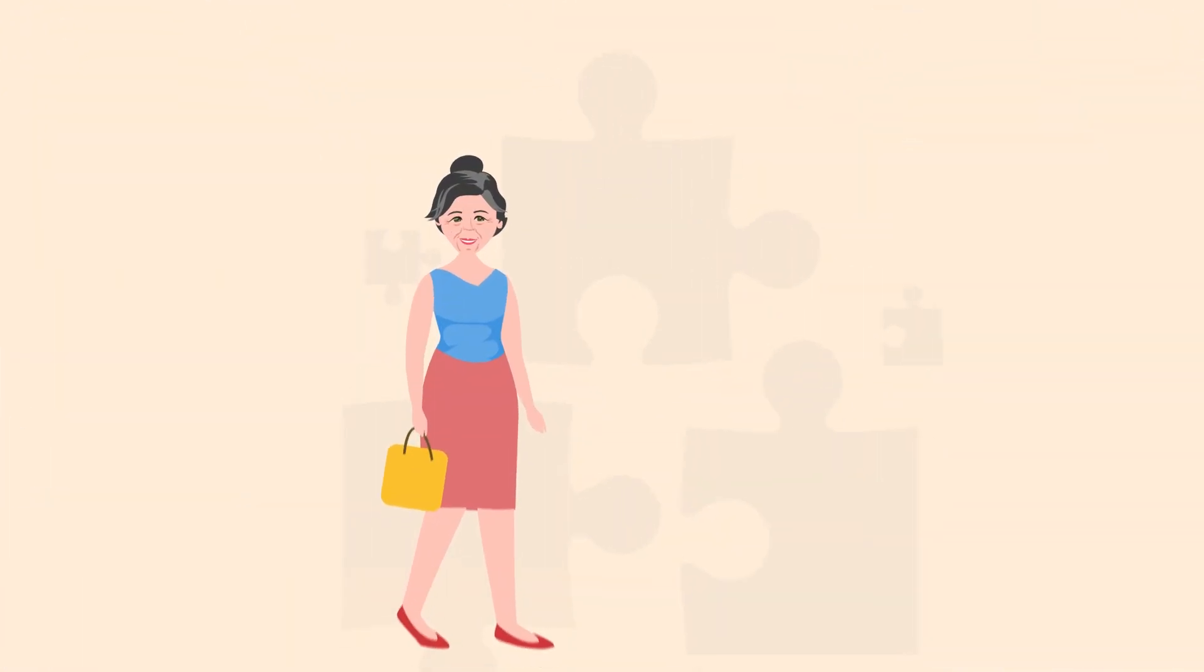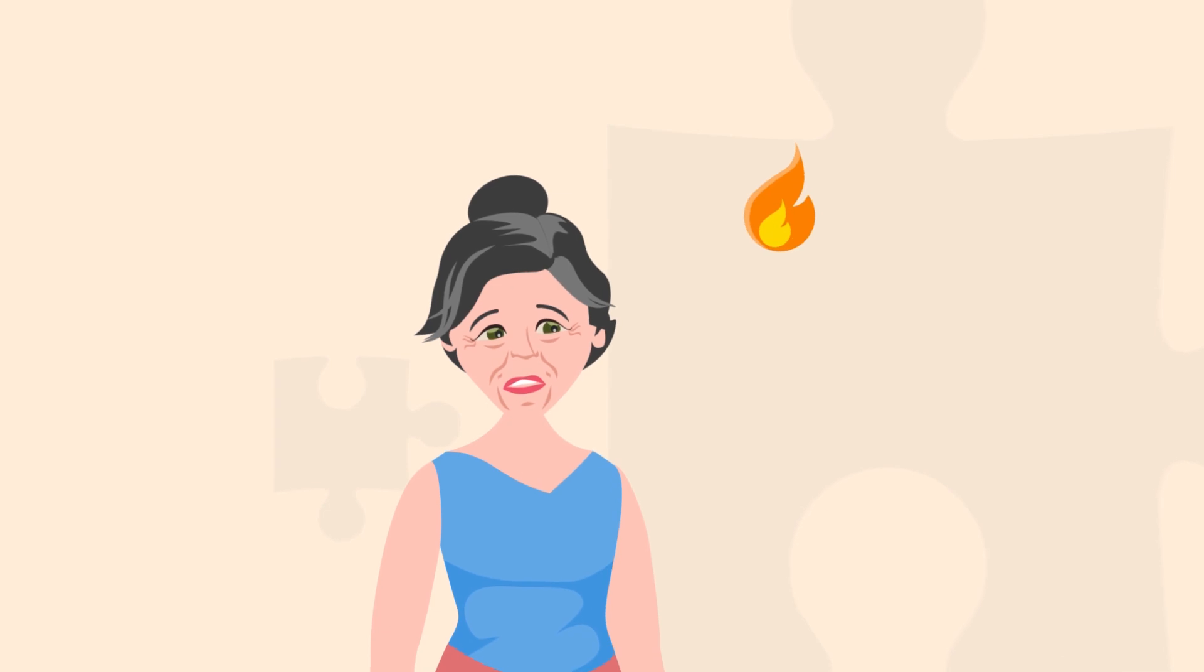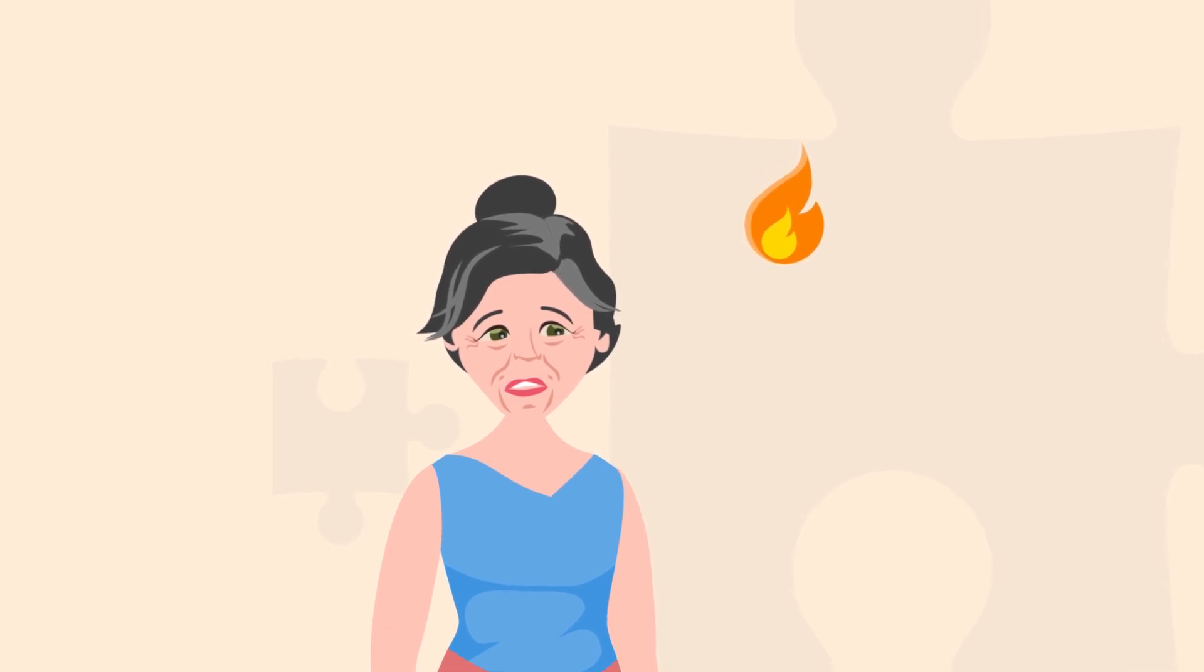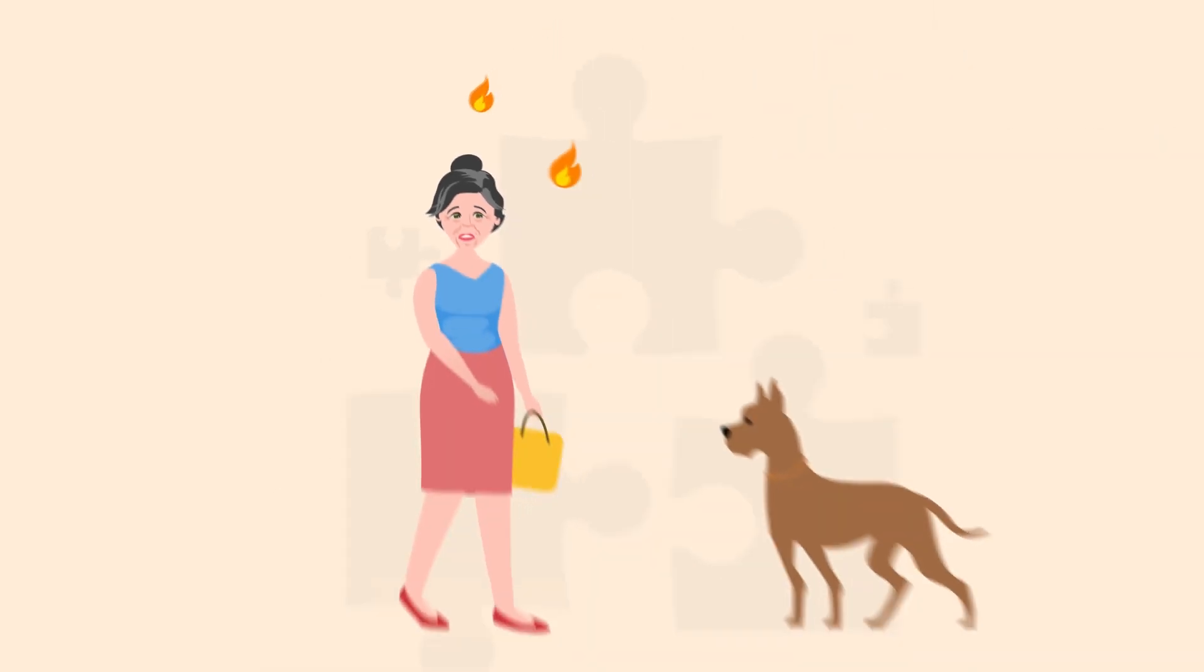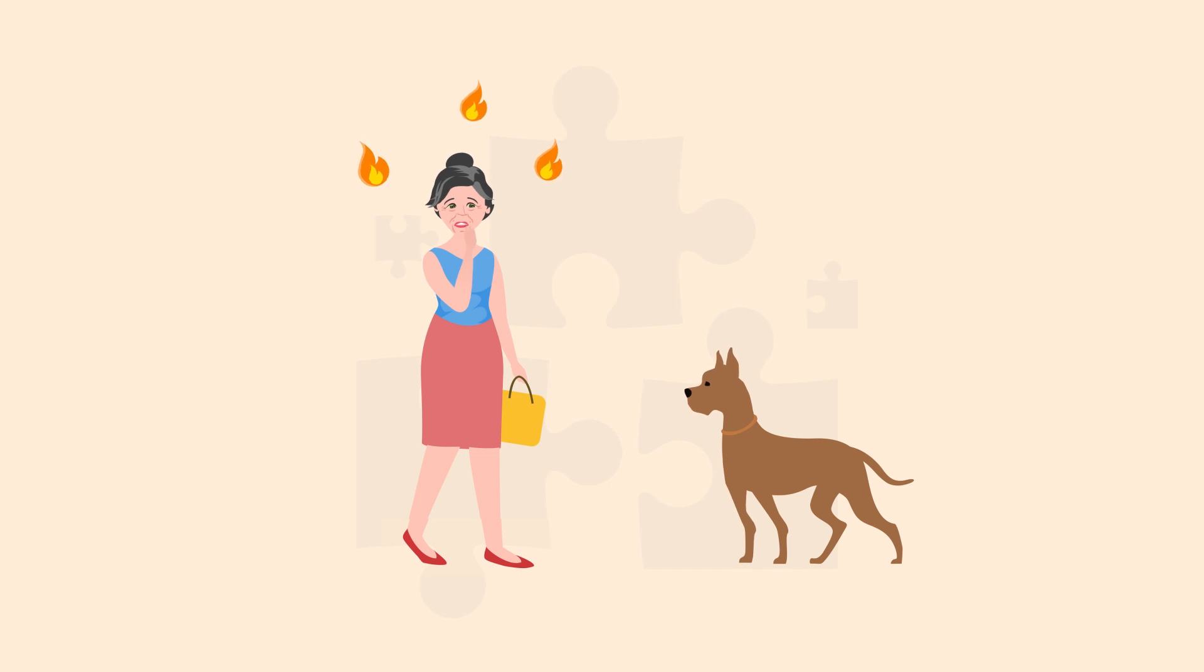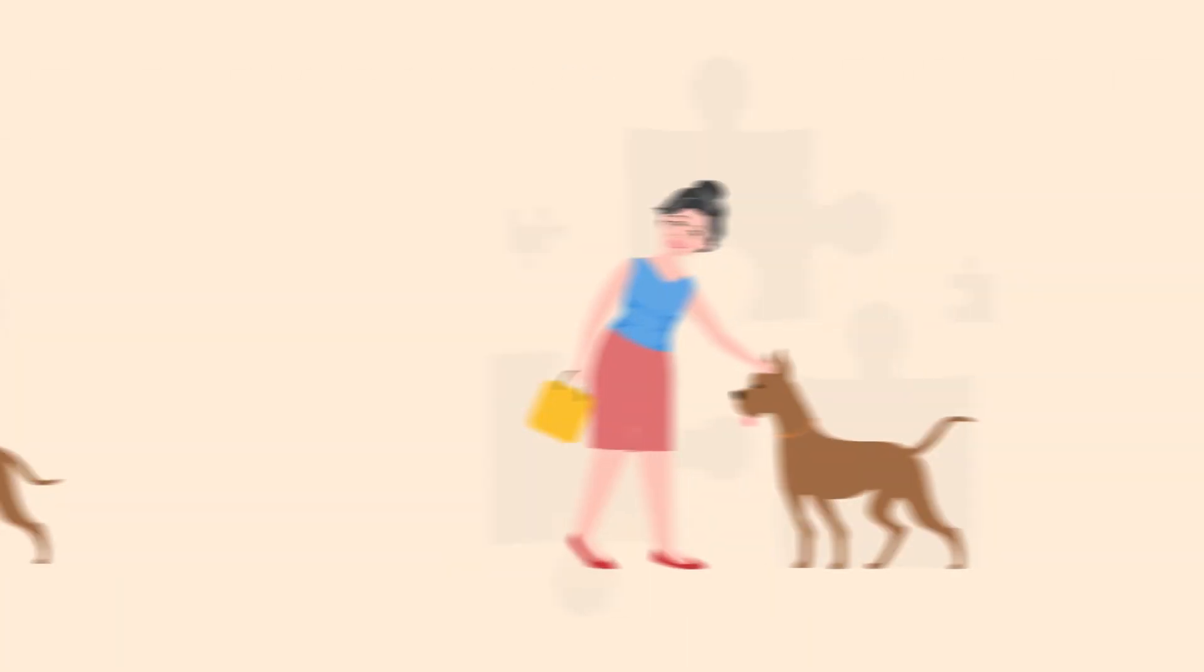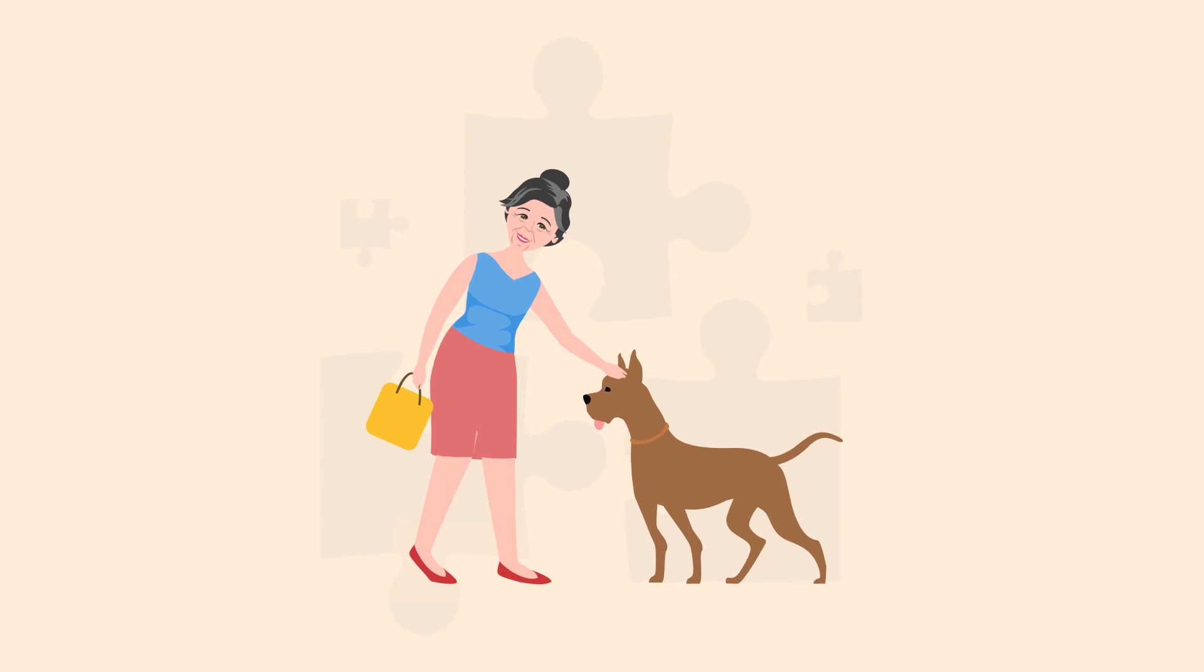When you perceive a sudden danger, stress is good. Clenched muscles, rapid breathing, and faster heartbeats help you fight or flee from the danger. This acute stress begins and ends quickly. When the danger goes away, your body returns to normal.